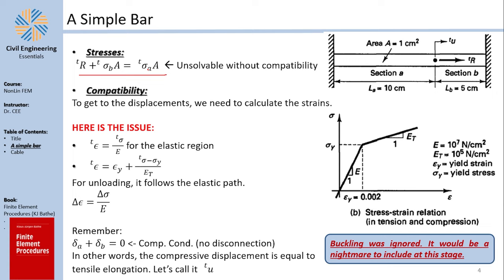Now, sigma_B and sigma_A — how do I calculate those? I need them because compatibility involves strains and displacements. The problem is that the relationship between strain and stress was previously linear, but now it is nonlinear. So the question becomes: are we in strains before the yielding strain, or after? Because if you are before yielding you have one equation, and if you are after you have another.